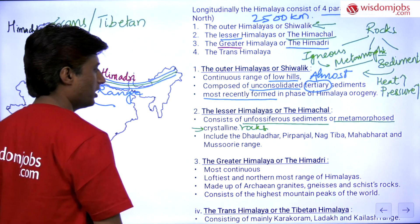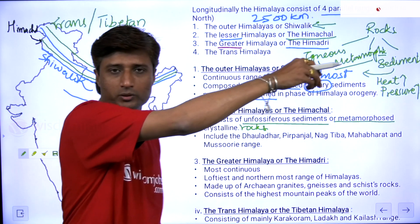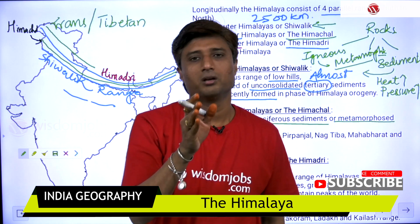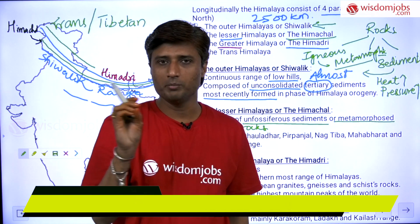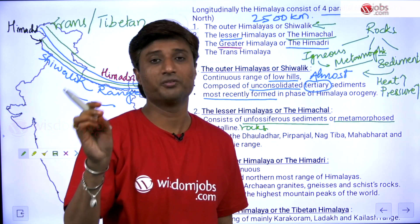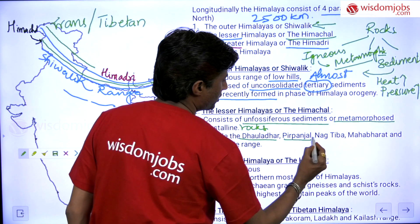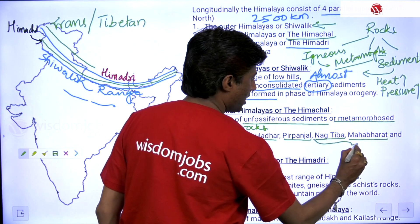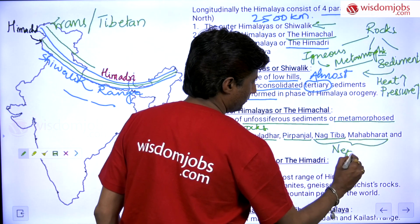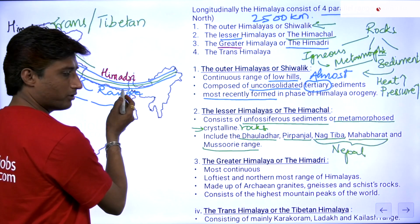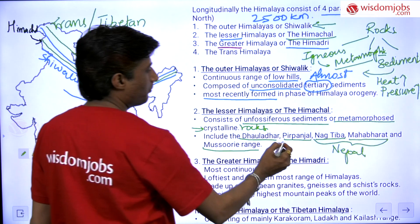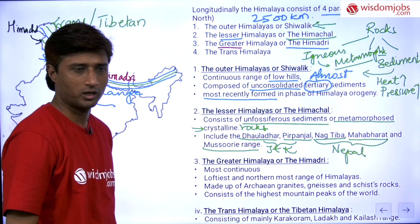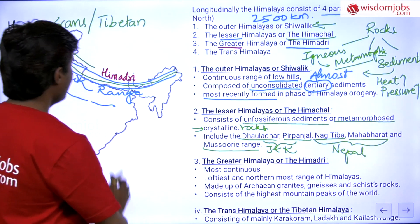Although Himachal is a continuous range, at some points it is separated by gaps, and these sub-ranges are named differently by region. The sub-ranges include: Dauladhar range, Pir Panjal, Nag Tibba, Mahabharat, and Mussoorie range. Of these, Nag Tibba and Mahabharat lie in Nepal, the Mussoorie range is in the West Bengal-Sikkim region, and Pir Panjal and Dauladhar lie in Jammu & Kashmir and Himachal Pradesh.